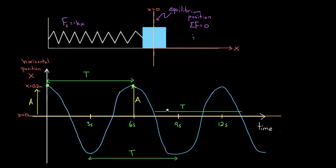Just make sure you don't do this: sometimes people think 'a period means a whole cycle, so I'll go from this equilibrium position back to that equilibrium position.' But that's not a whole cycle. Look at it: at this point the mass was going that way, and at this point the mass was going the other way. You can't start your clock when the mass was going one way, stop it when the mass is going the other way, and say you've gone through a whole cycle — because that hasn't fully reset.